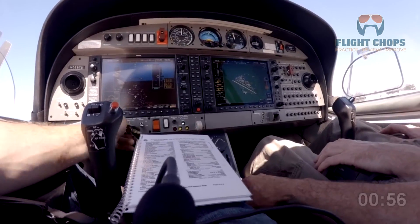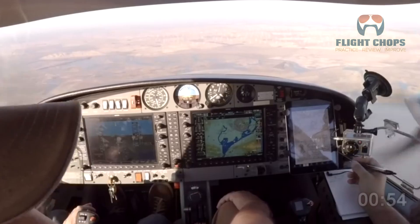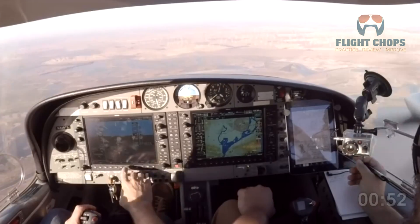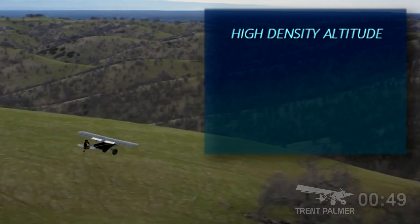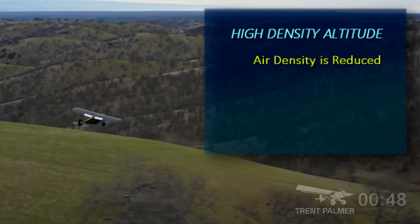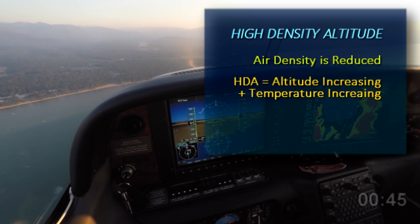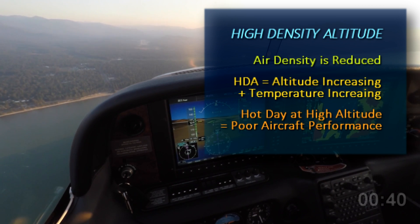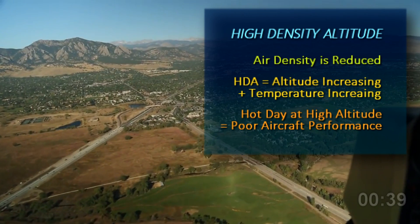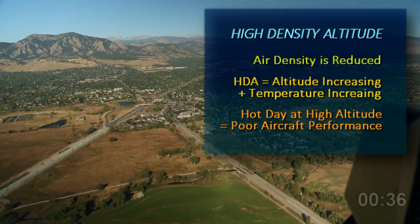Failure to take density altitude into consideration can put you and your passengers into a situation the airplane can't handle. High density altitude means air density is reduced. It's a combination of the lower pressure of a higher altitude and higher than standard temperature — for example, a hot day at a high altitude. High density altitude has an adverse effect on aircraft performance.